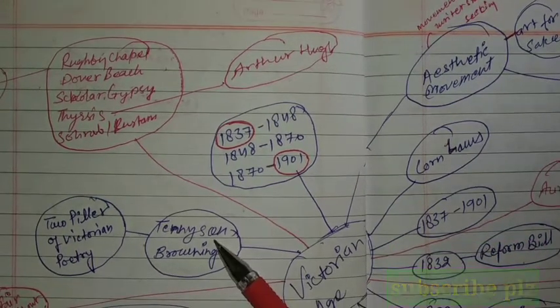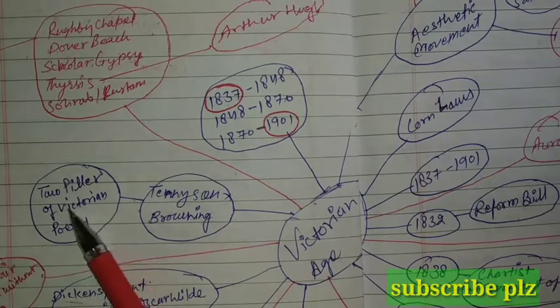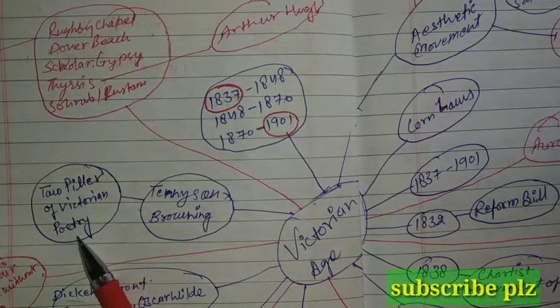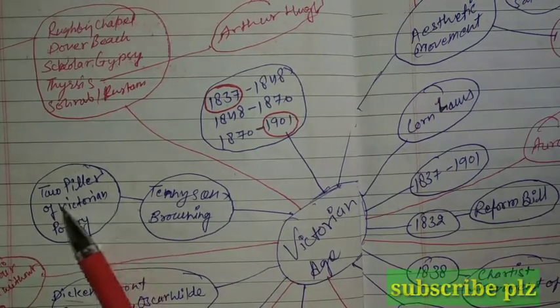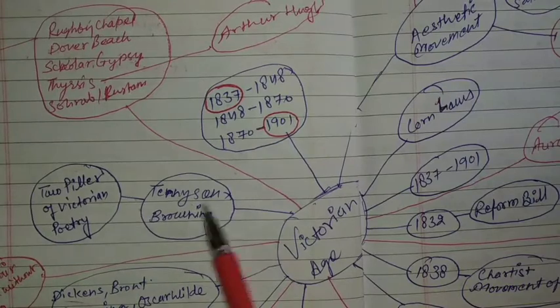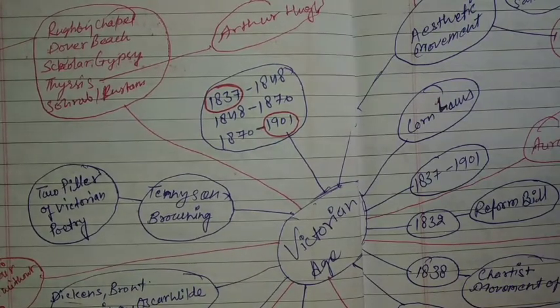Tennyson and Browning are called the two pillars of Victorian poetry. So the two pillars of Victorian poetry are Tennyson and Browning.